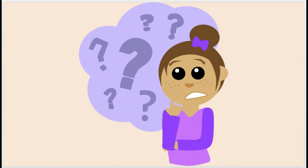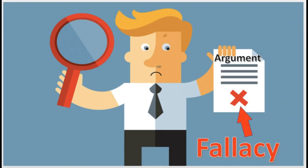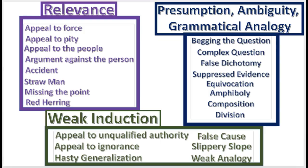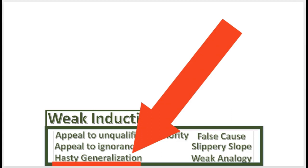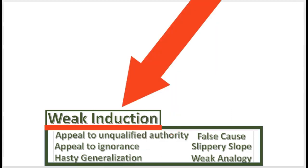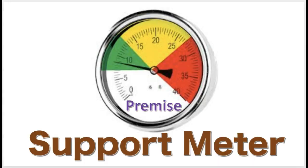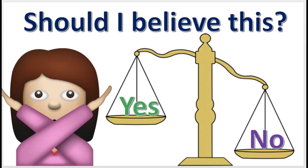What is a fallacy, you might ask? Well, a fallacy is an error or defect in an argument. These 22 fallacies are covered on this channel. The hasty generalization fallacy is a fallacy of weak induction, which means the premises do not provide enough support to believe the conclusion.